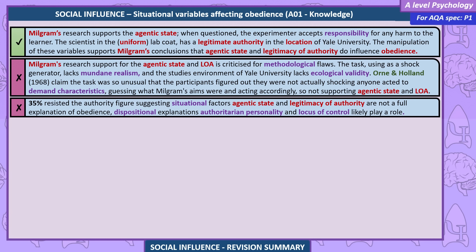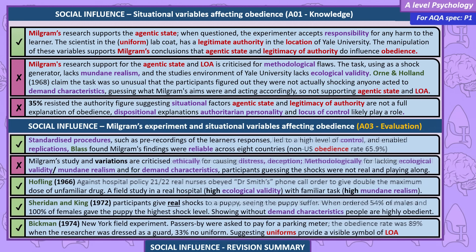35% resisted the authority figure, suggesting situational factors — agentic state and legitimacy of authority — are not a full explanation of obedience. Dispositional explanations such as authoritarian personality and locus of control likely play a role. Standardised procedures, such as pre-recordings of the learner's responses, led to a high level of control and enabled replications. Blass found Milgram's findings were reliable across eight countries, with a non-US obedience rate of 65.9%. Milgram's study and variations are also criticised ethically for causing distress and deception, and methodologically for lacking ecological validity, mundane realism, and for demand characteristics.